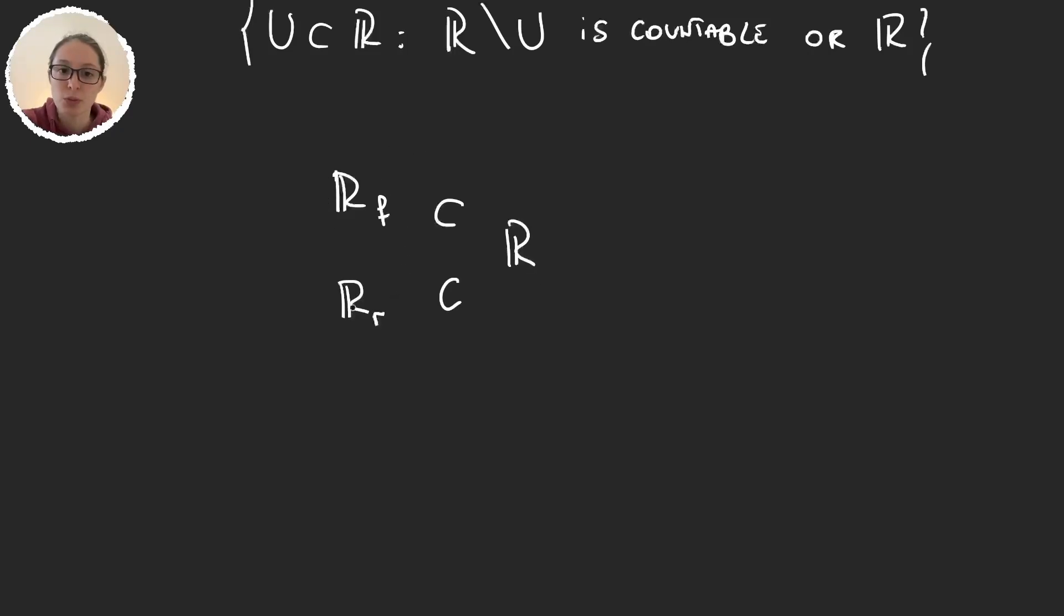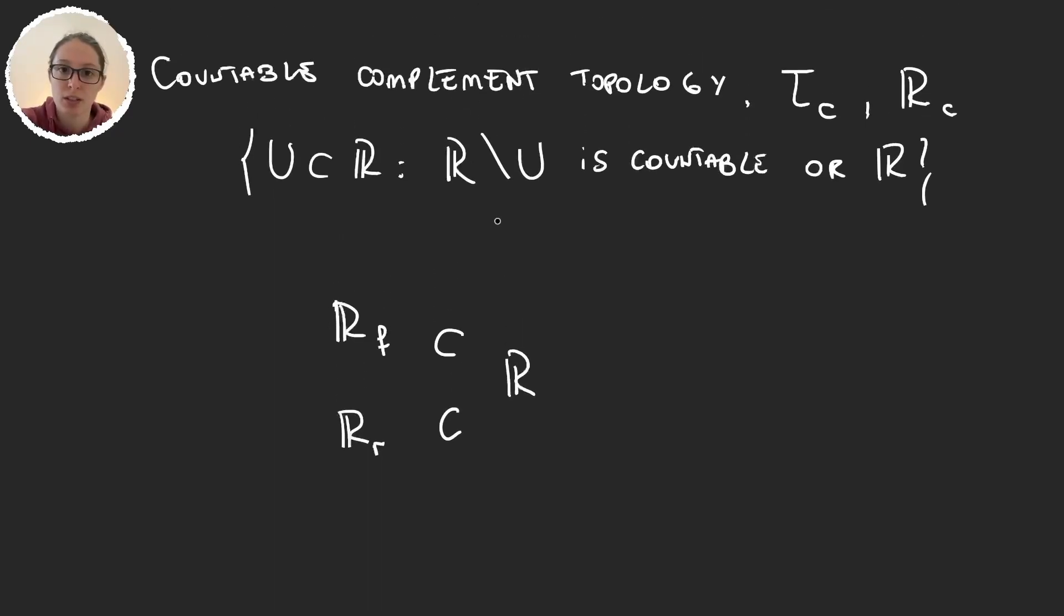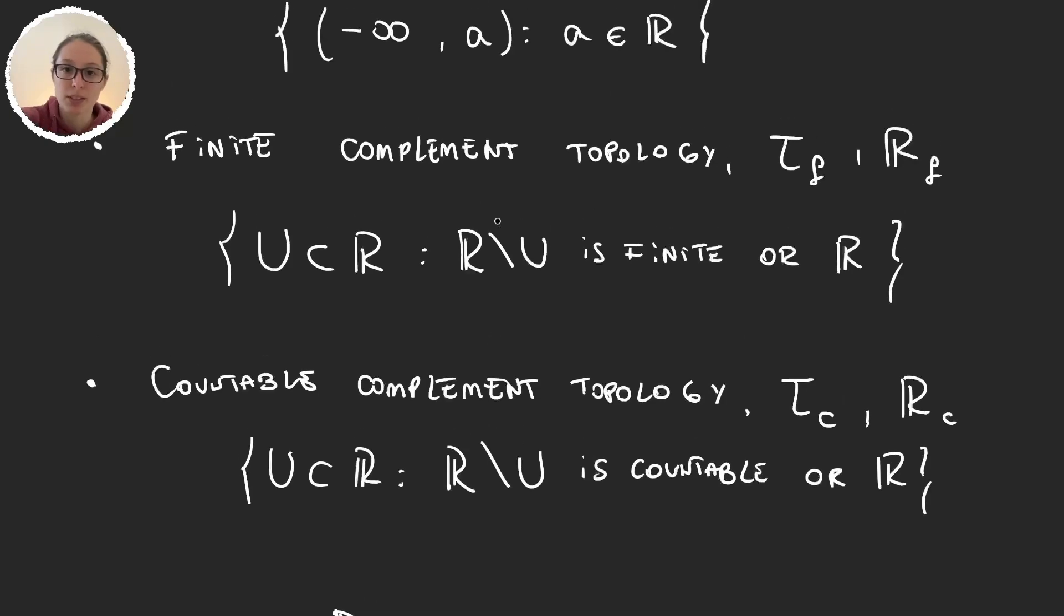Let's remember first what these two topologies were. Rf is the finite complement topology, so it's formed by unions and finite intersections of sets for which the complement is either finite or is the real numbers.